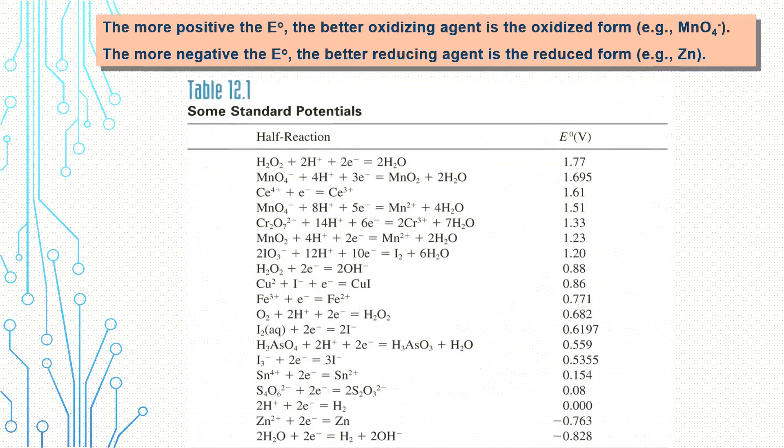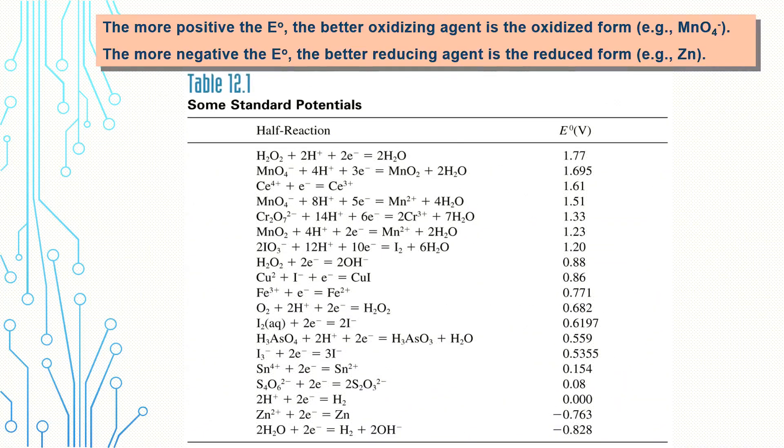The standard reduction potential is the tendency for a chemical species to be reduced, and it's measured in volts at standard conditions. The more positive the potential, the more likely it will be reduced, and vice versa. For the redox reaction to proceed, the difference in the potentials of the reacting systems must be greater than or equal to 0.2 volts. One last point: the hydrogen half cell equals zero.